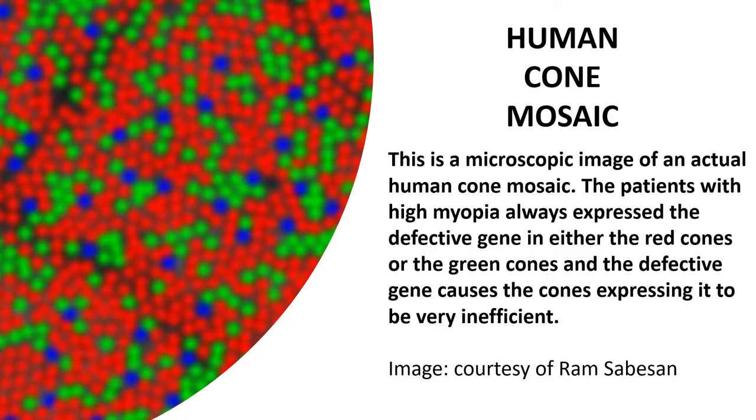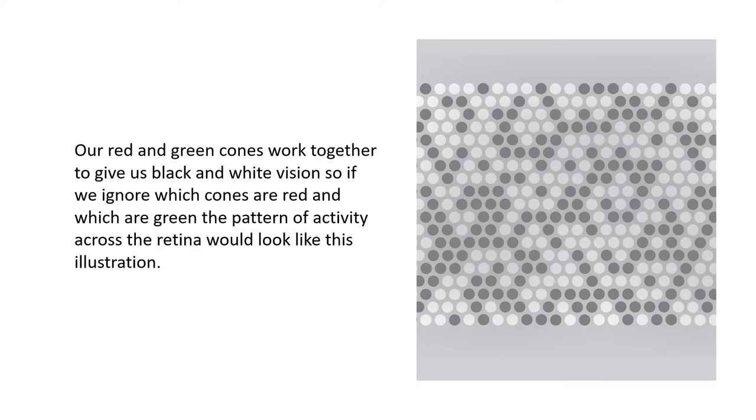Hello everyone, Jay here with the second half of our presentation. I just want to echo Maureen's sentiment that we feel deeply honored to have been chosen for this award and we're really happy to be able to have this opportunity to tell you our myopia story. This is a microscopic image of the human cone mosaic with its red, green, and blue cones. The patients with high myopia always expressed the defective gene in either the red cones or the green cones, and the defective gene causes the cones expressing it to be very inefficient at absorbing light. What this means is that there's always very high contrast between the normal cones and their neighbors that express the mutant pigment.